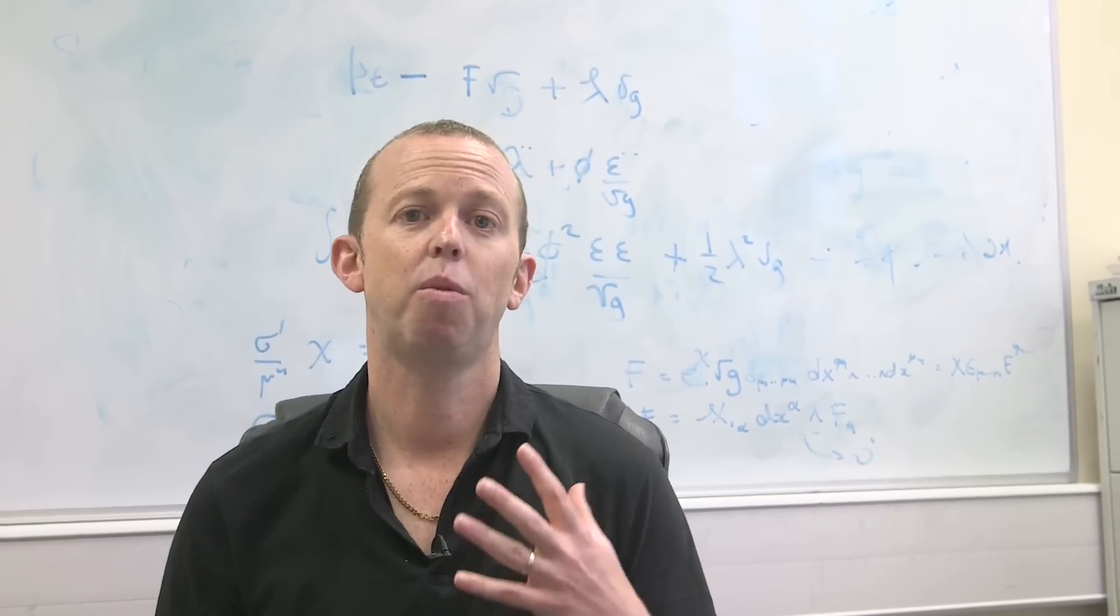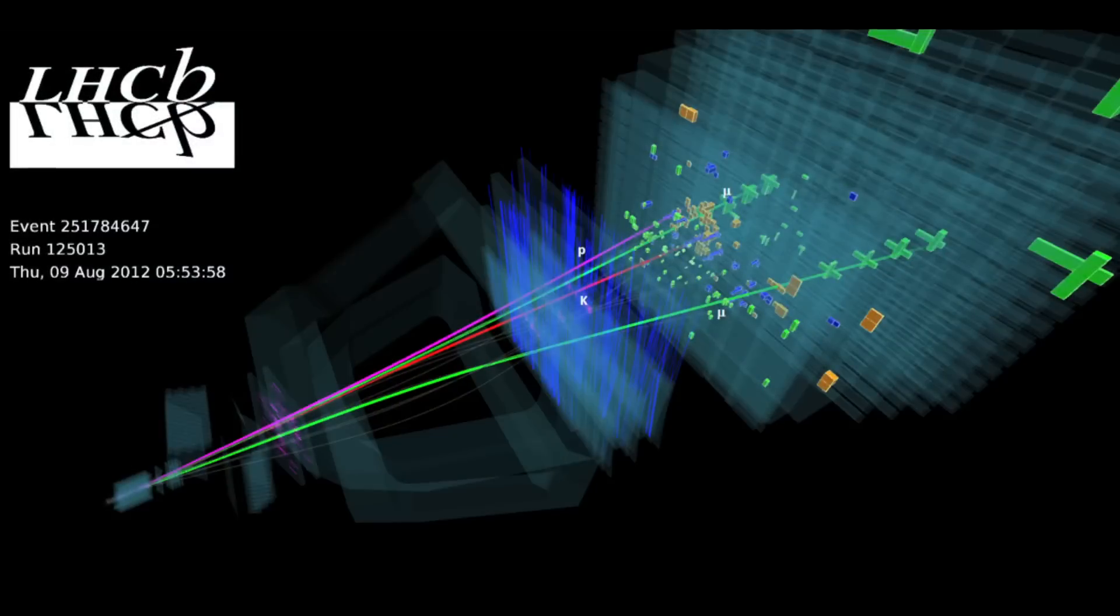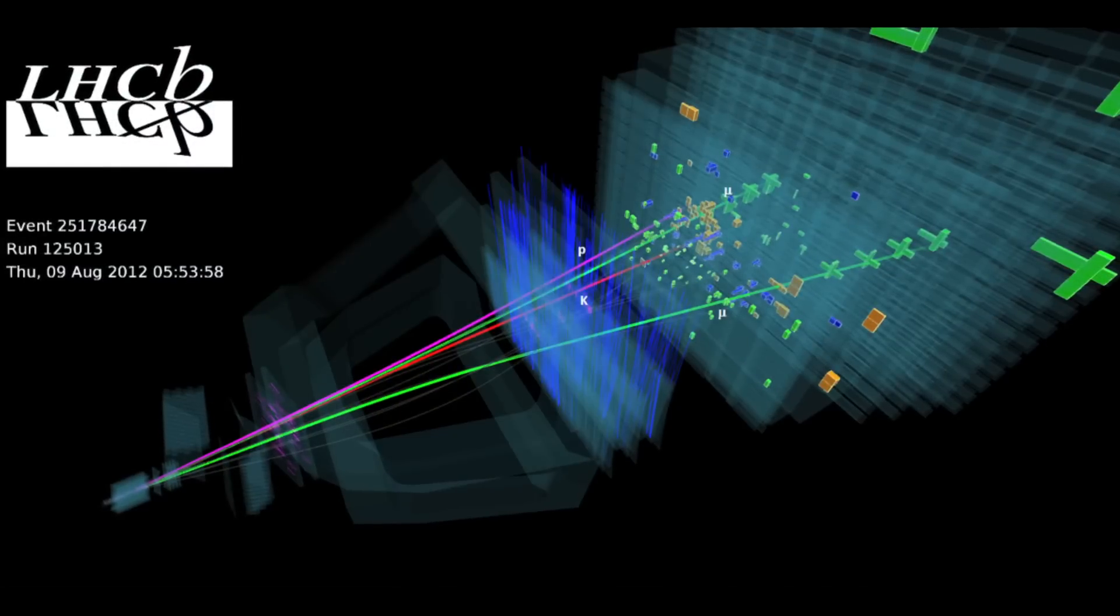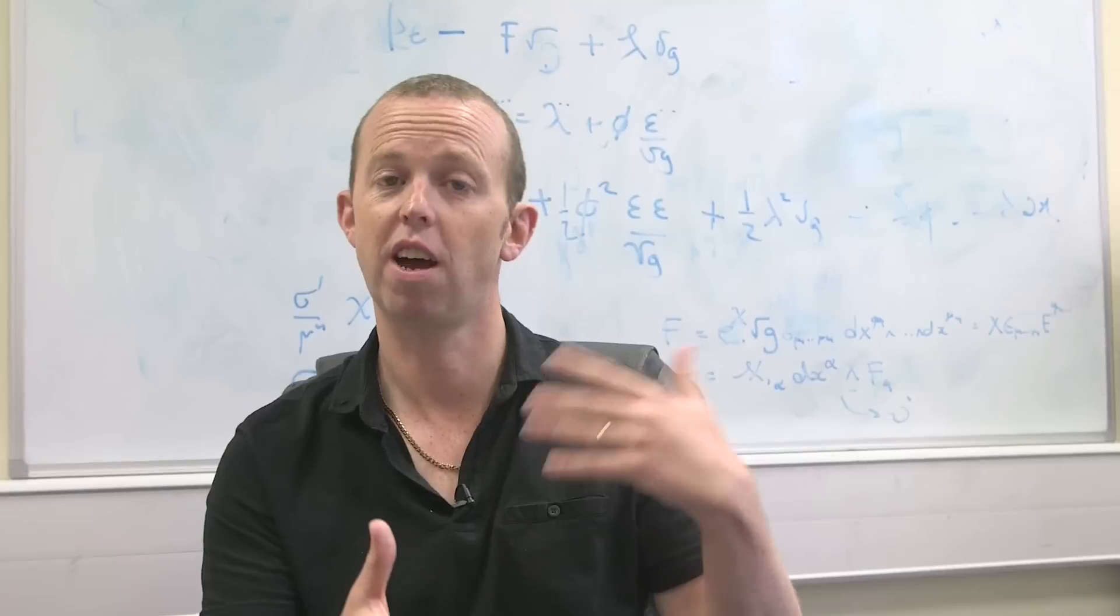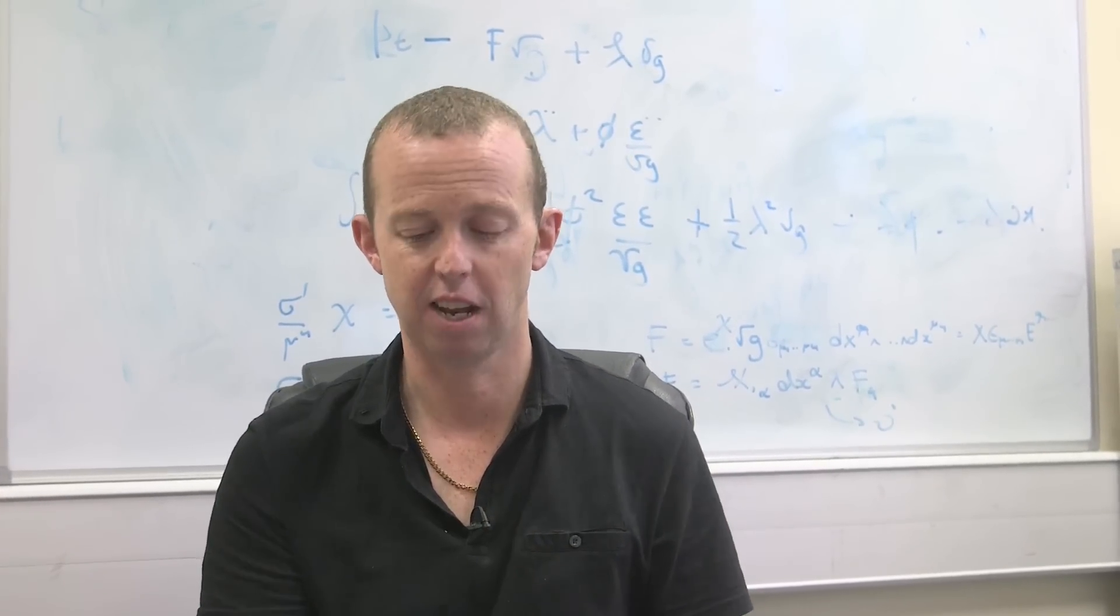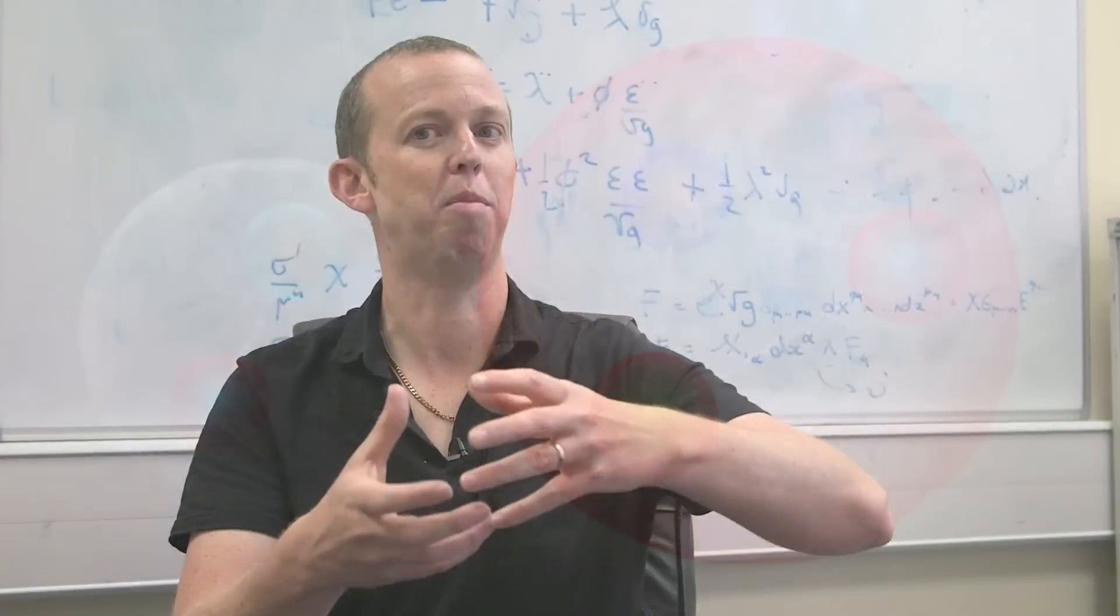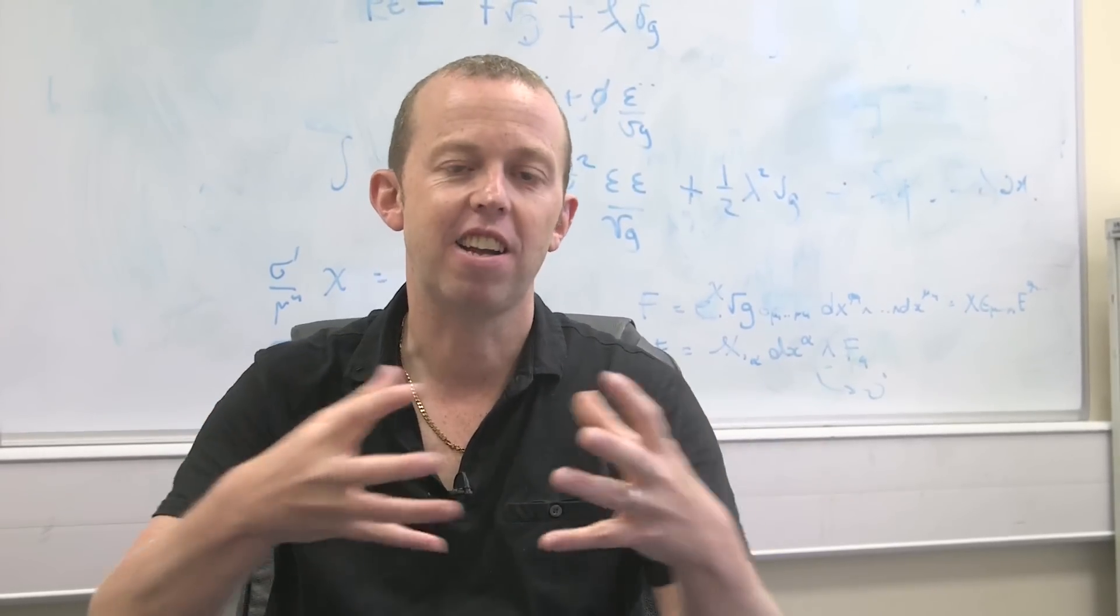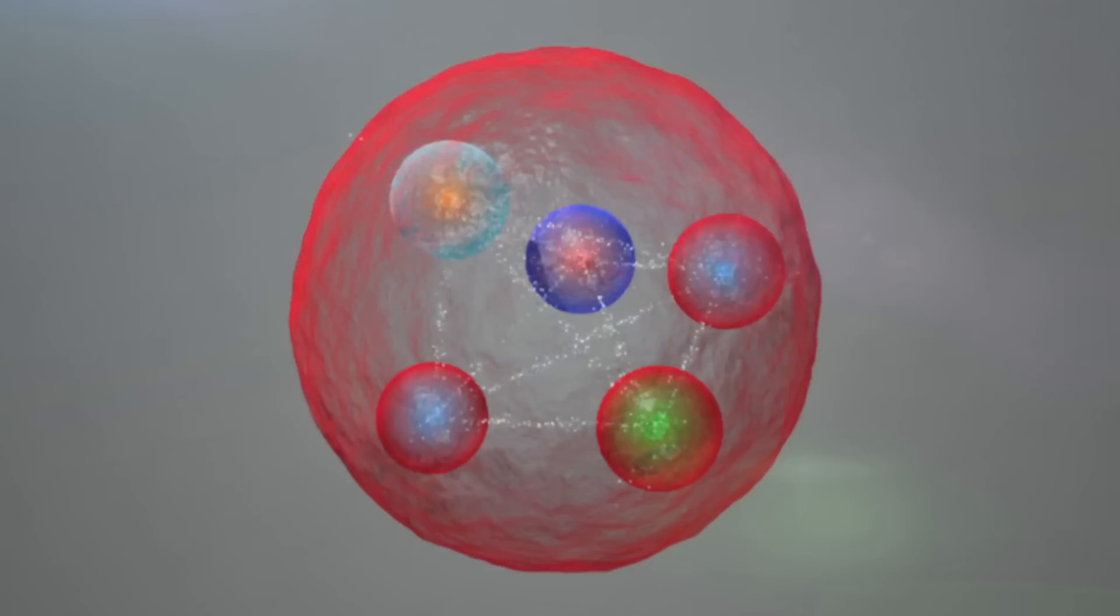One thing we don't know, and obviously they'll do more and more experiments at the LHC to try to establish this. We don't really quite know how these quarks are binding together inside the pentaquark. That's something that they'll try to learn by doing more precise experiments. Could it be that it's like a baryon and a meson combining to form like a kind of giant quark molecule? Or is it that they're actually really tightly bound in a completely new state of five quarks?